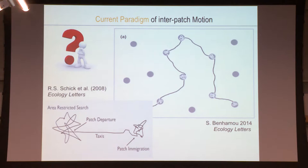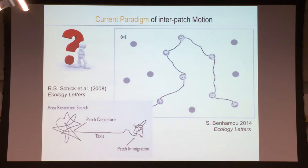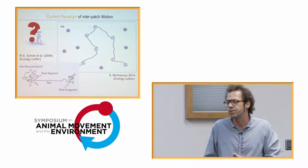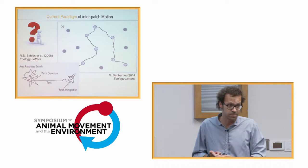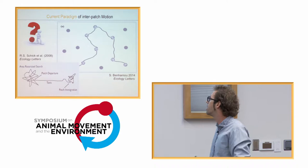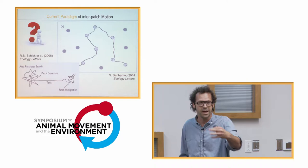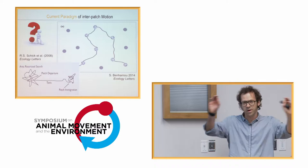There's another reason for people to draw straight lines between patches, and it's based on search theory. Previous search theory assumed that the best thing an animal can do when it has no information is go ballistic. So either because theory said the best strategy is to search linearly without information, or because we assume animals are fully informed through memory, or because we assume there's always a taxis guiding animals between patches — we always have this idea of a straight line between two patches.